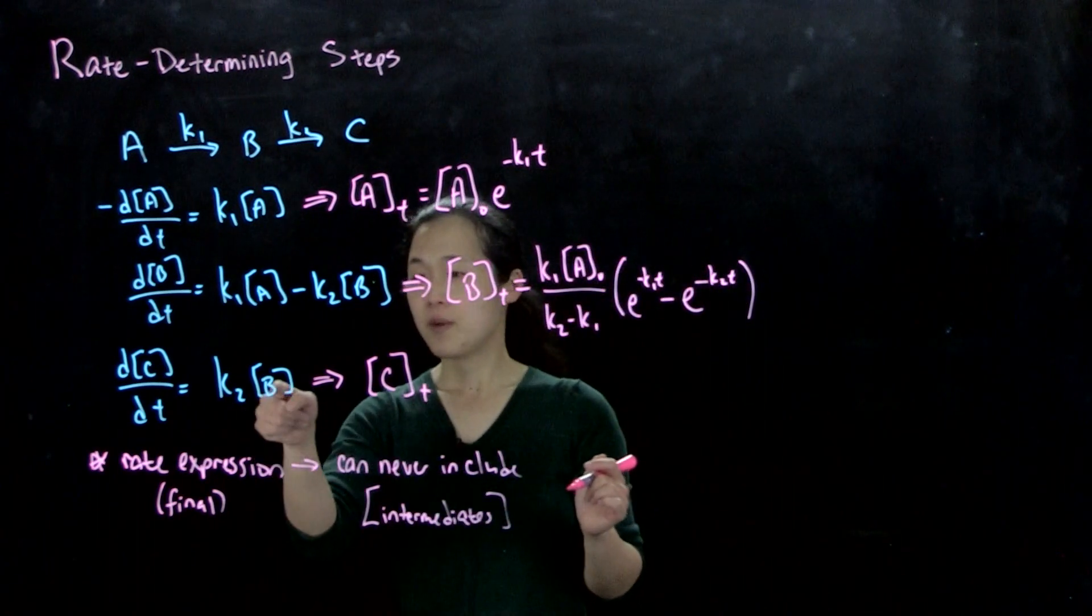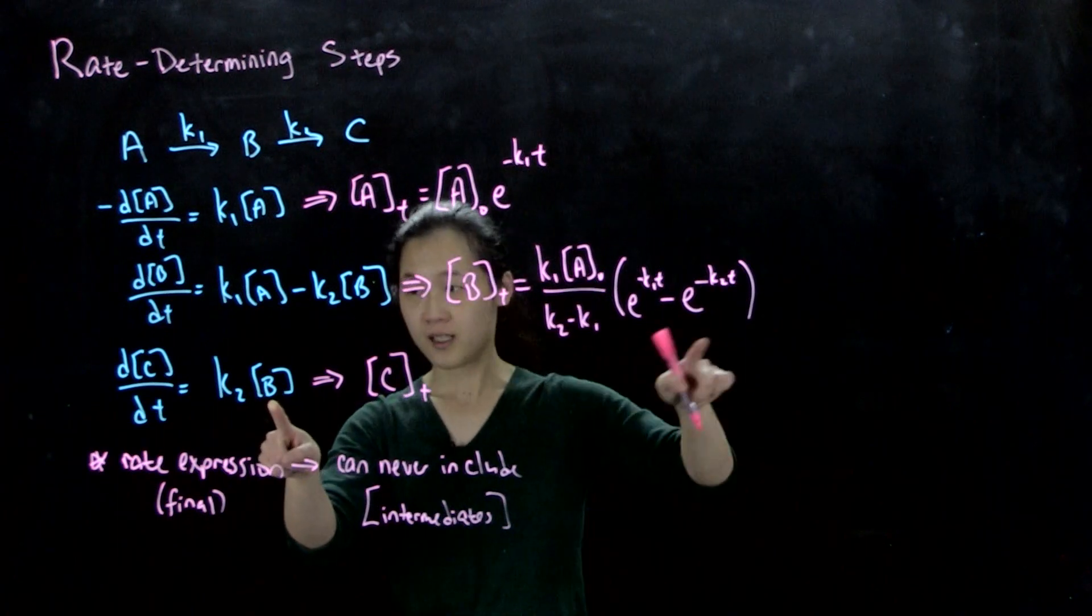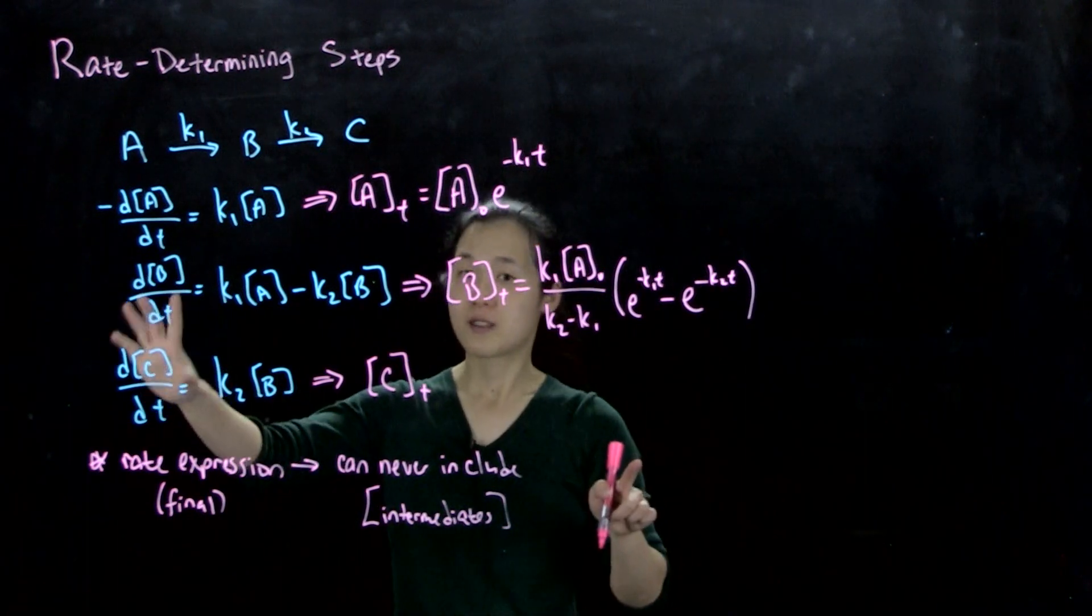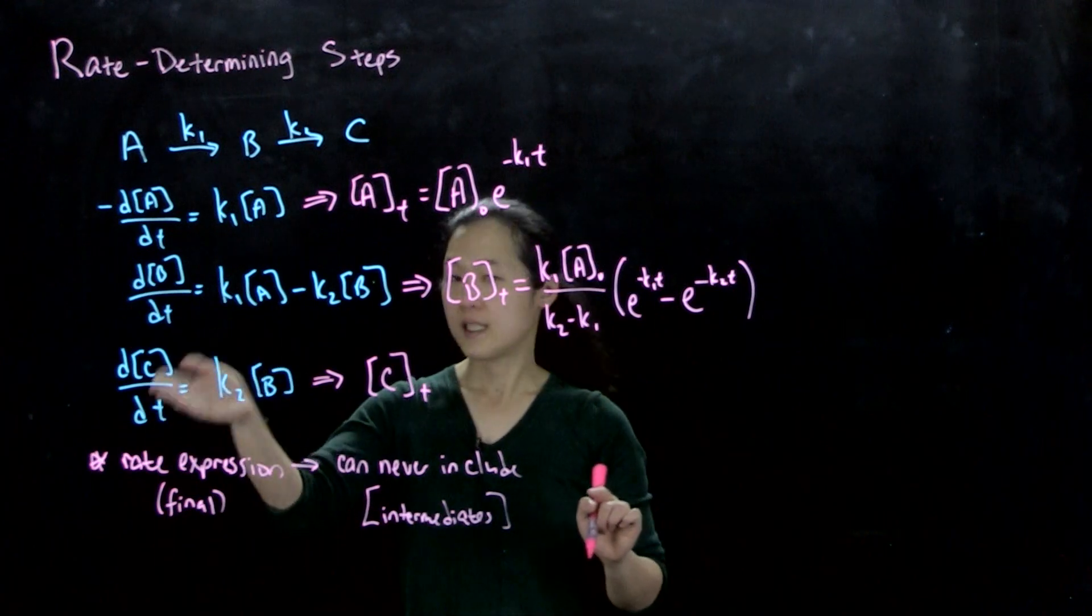So regardless, if we solve for B, which we know from this, we'll plug this in into our expression, and then solve for the first-order reaction of dC/dt.